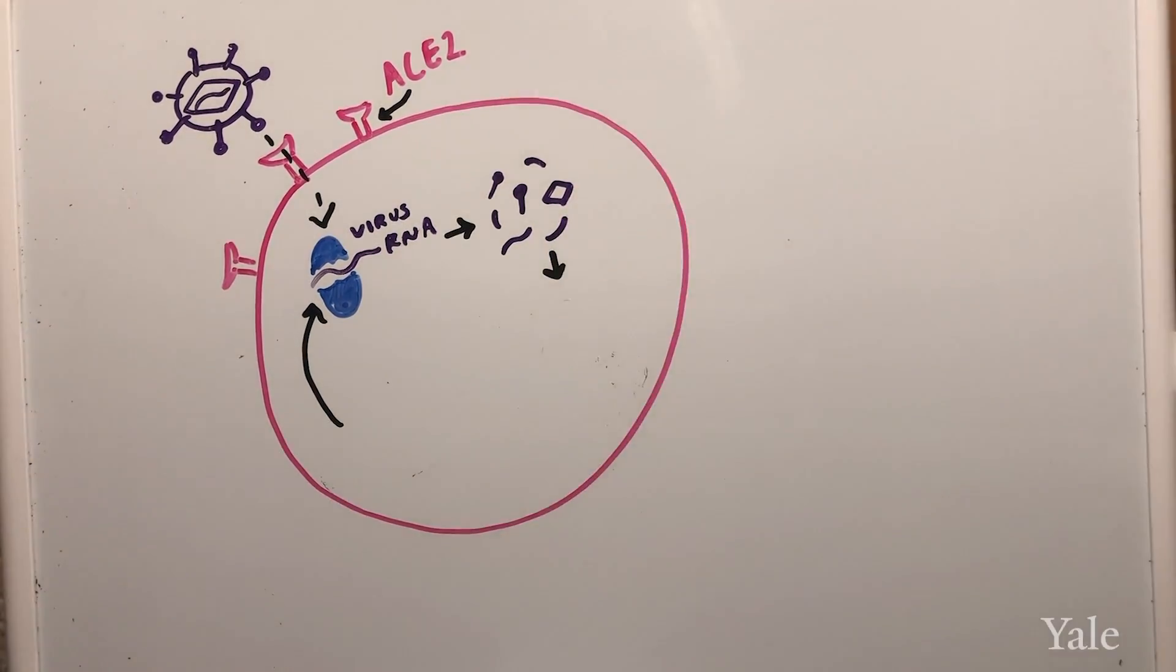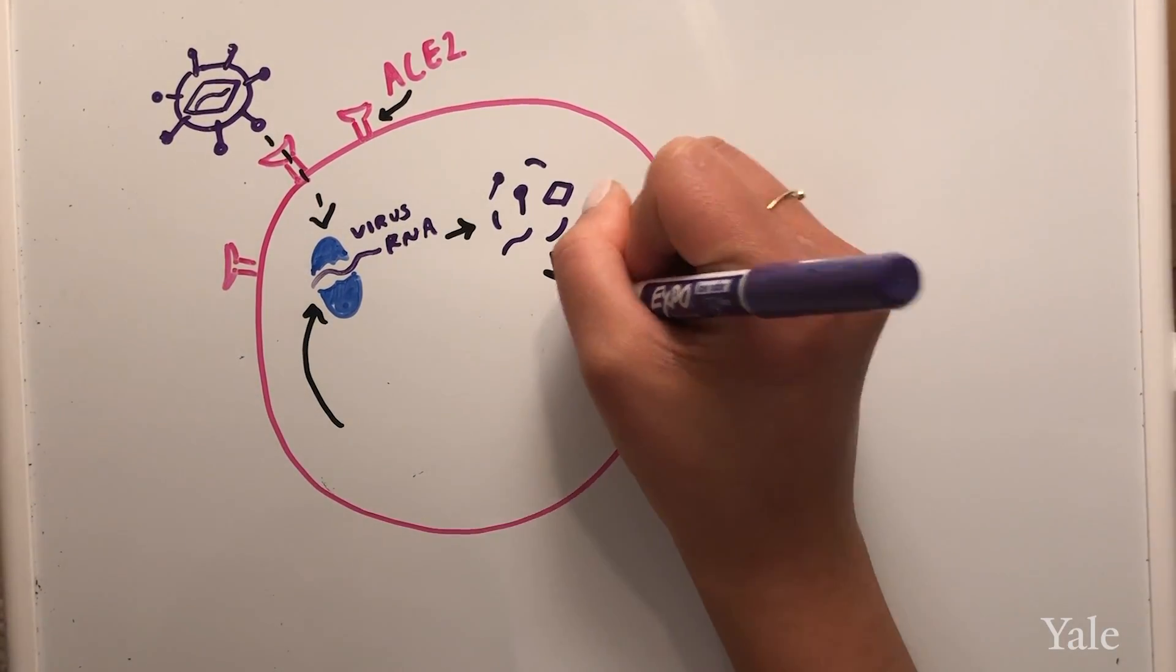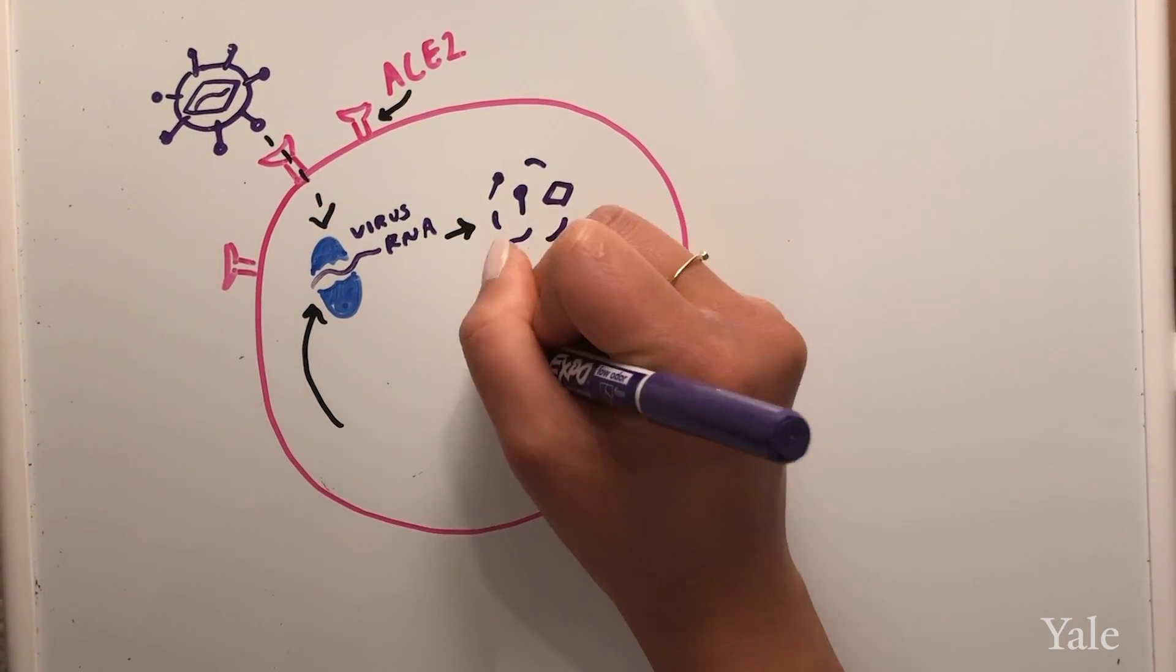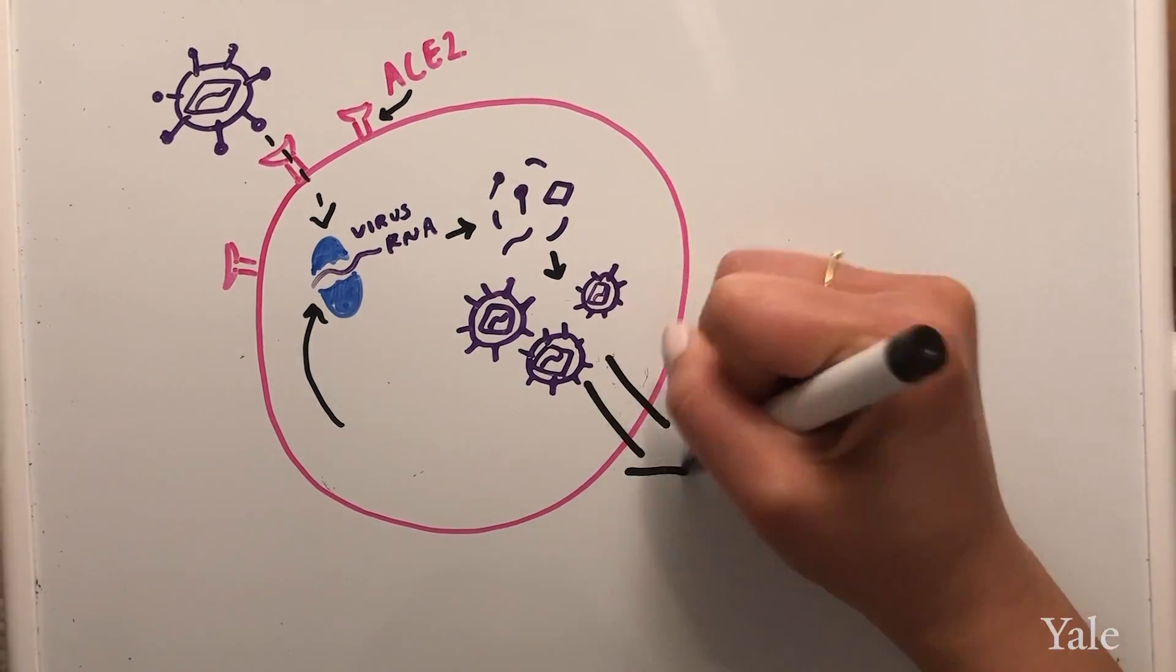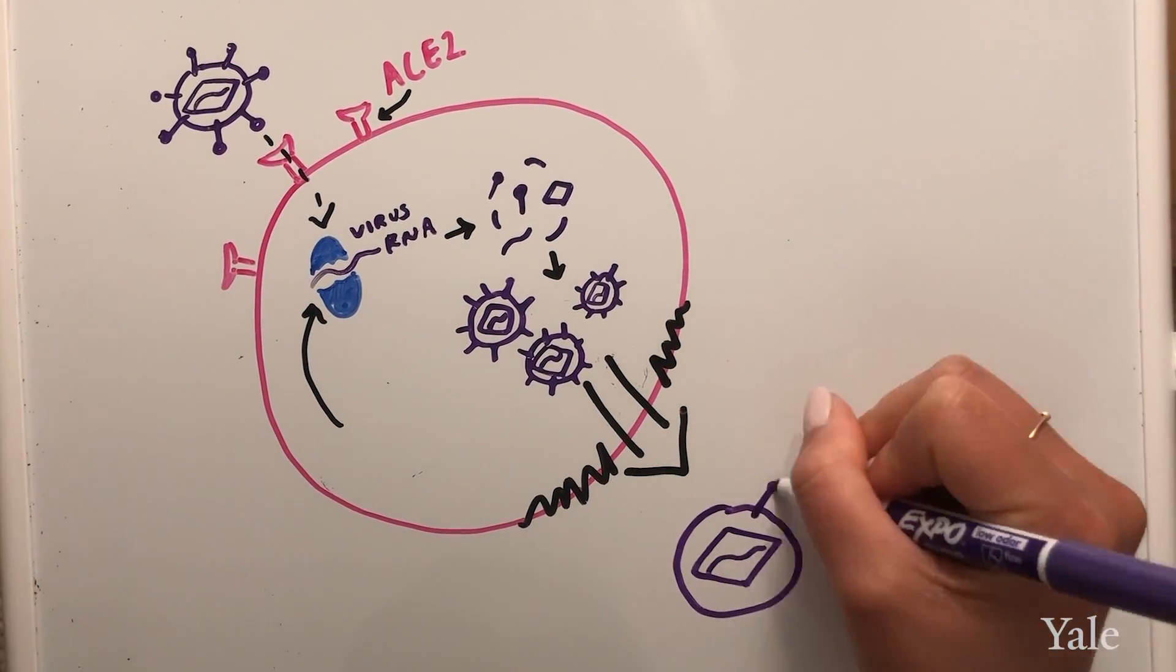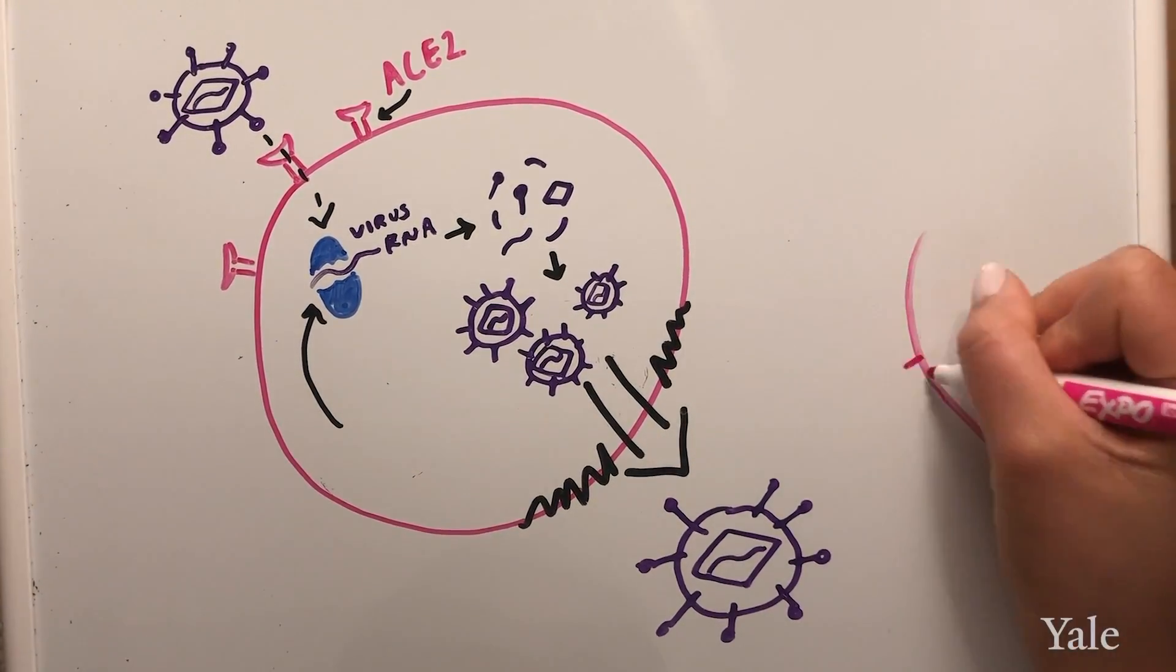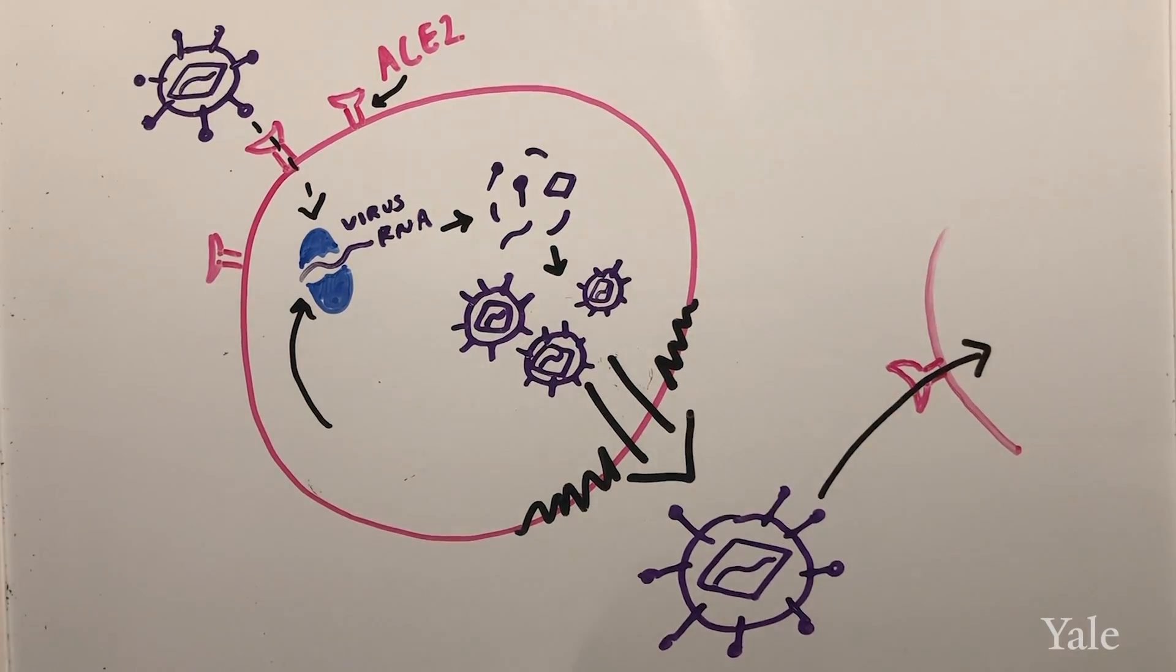Essentially, it turns the cell into a virus-making machine and in the process destroys the cell. Once it makes a ton of the virus, it breaks out of the cell, destroying the cell, and all the new viruses will move on to other cells to repeat the process.